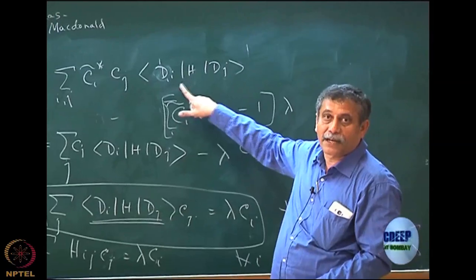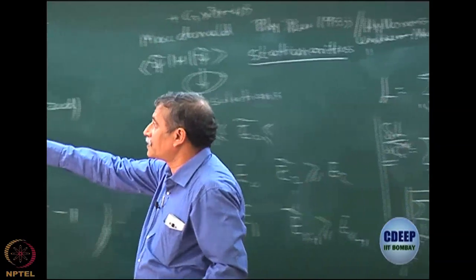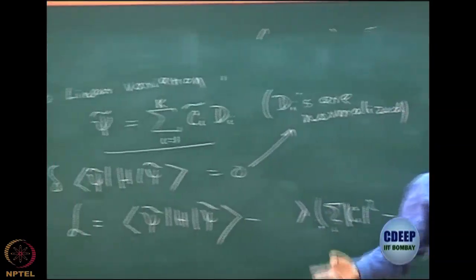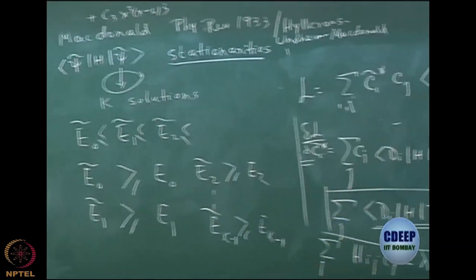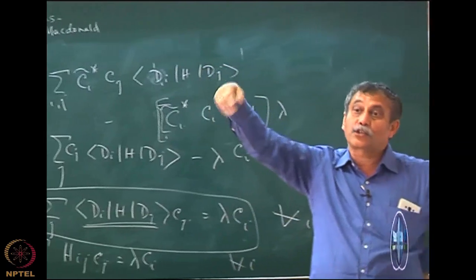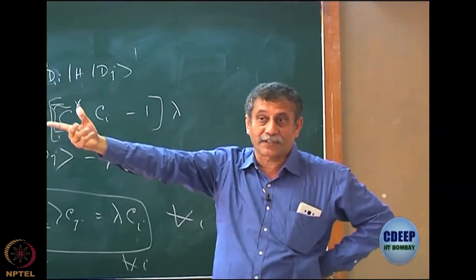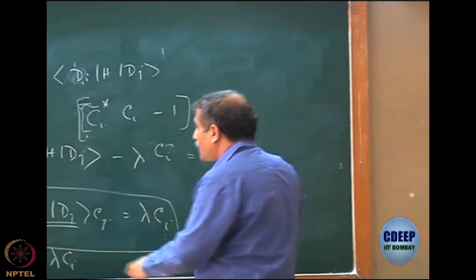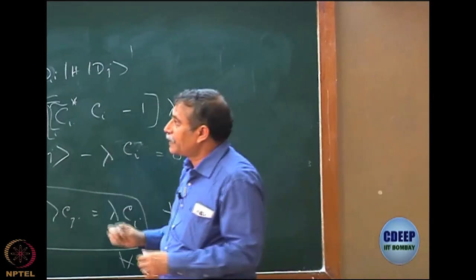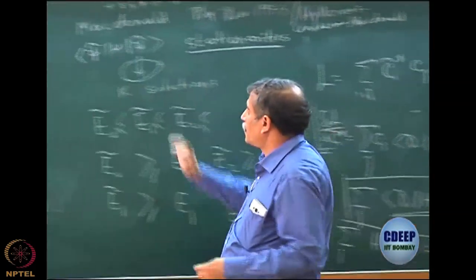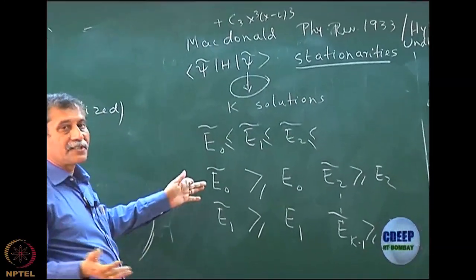Please remember: these are any basis, so obviously they are not eigenfunctions. If these were eigenfunctions of the Hamiltonian, I would not do this — my d's would already be eigenfunctions. So I expanded psi tilde in terms of eigenfunctions only to show the upper bound principle. Of course, I do not know the eigenfunctions. So these are some basis in which you calculate this matrix element and then solve an eigenvalue equation, and then you get all the k solutions of the linear variation problem, which have the separation theorem property.